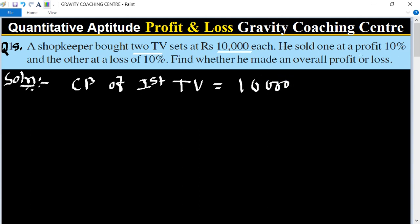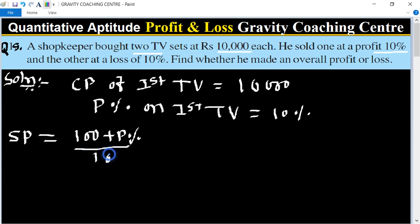And profit on first TV is 10%, so profit percent on first TV equals 10%. So SP equals, its formula is 100 plus profit percent upon 100 multiply by CP.